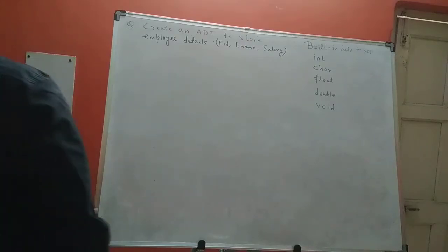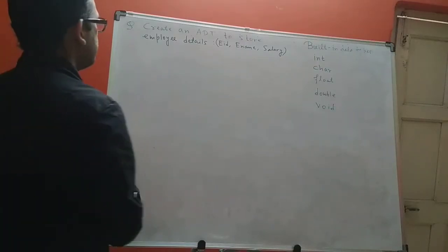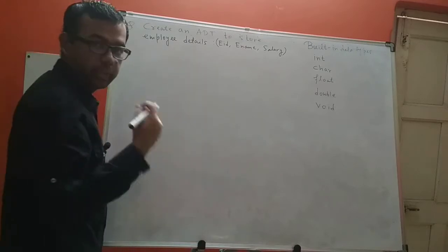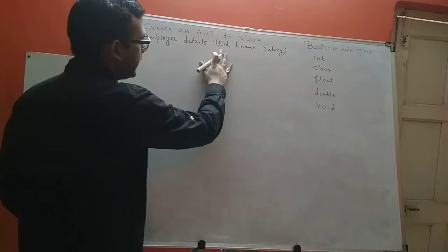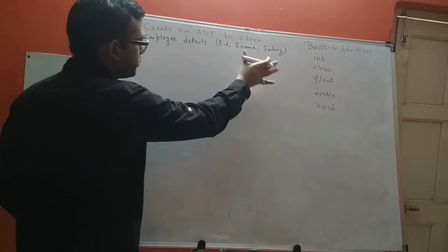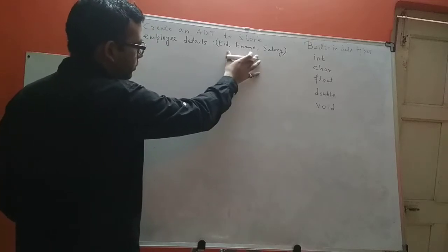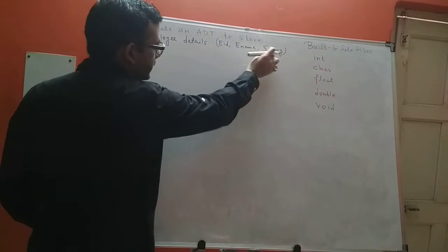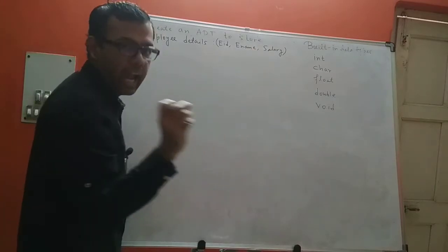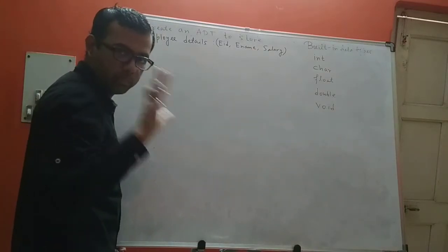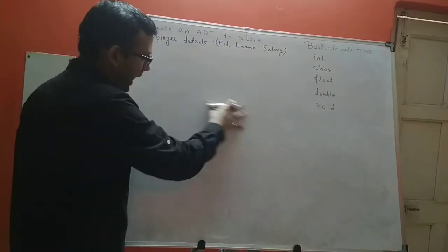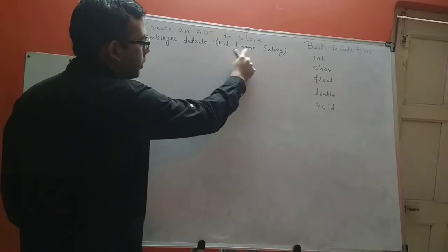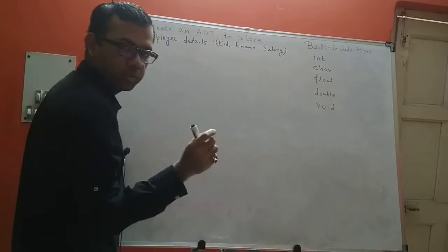Let's create an abstract data type to store employee details. The details I want to store are EID, E-Name, and salary. I want to store these three attributes of an employee all at one single place.